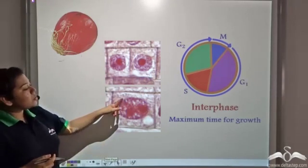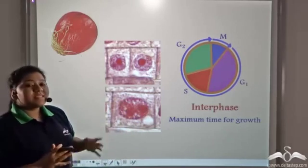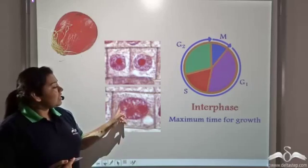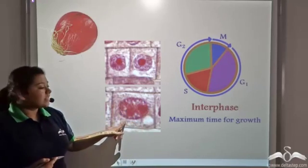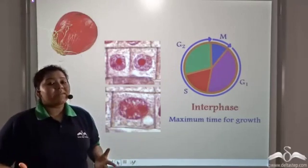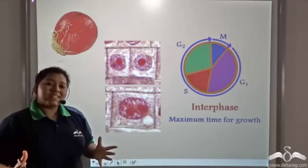A few cells might look like this, which has doubled in volume. So we can understand that this cell is in the interphase, that is the phase where it gets maximum time for growth and doubling of size.